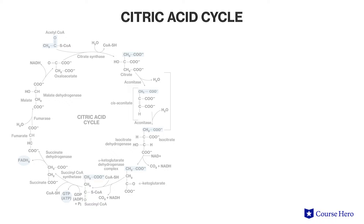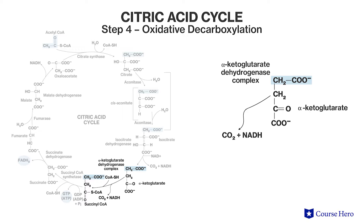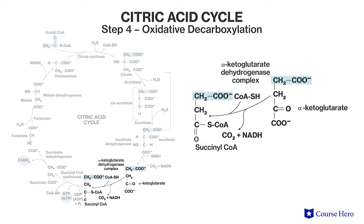Step 4: A dehydrogenase enzyme oxidizes alpha-ketoglutarate with the help of NAD+. This produces NADH and causes another carbon dioxide molecule to be released. The remaining four-carbon molecule is added to CoA to make succinyl-CoA.